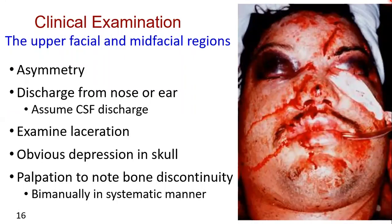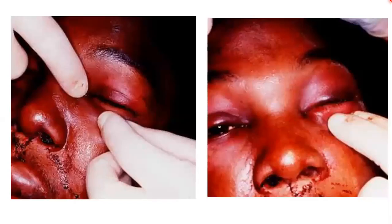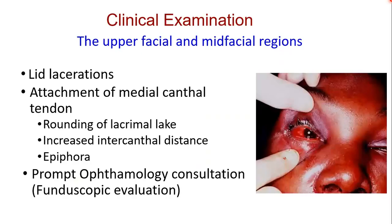Asymmetry should be noted if present. Examine the nose for CSF rhinorrhea. The upper facial and mid-facial region should be palpated for laceration, obvious depression in the skull, step deformities in the forehead, orbital rim, nasal, or zygoma areas. This should be done bi-manually in a systematic manner. Firm digital pressure over these areas is used to carefully evaluate the bony contours. Look for lid lacerations and assess the attachment of the medial canthal tendon, and take immediate ophthalmology consultation if indicated.